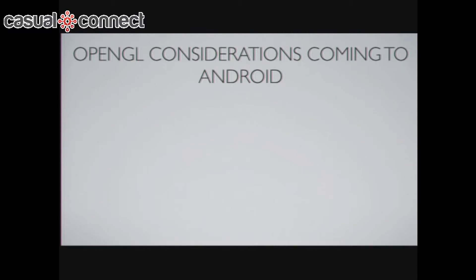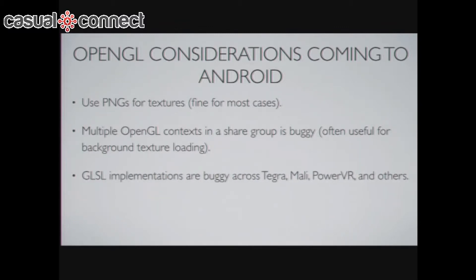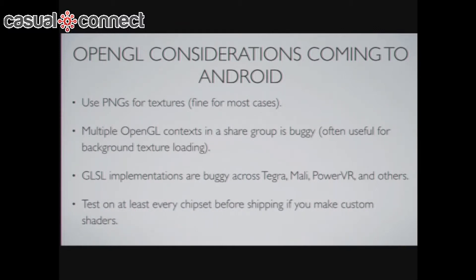This gets into the technical stuff that comes up when coming to Android from other platforms. If you're using OpenGL, it's probably best to use PNGs. Using proprietary texture compressions for each platform is going to get you into trouble in a lot of cases — PVR is popular in iOS but harder to use for Android. Multiple OpenGL contexts will also shoot you in the foot: certain Android drivers are really bad with OpenGL and multiple contexts. GLSL implementations are extremely buggy, and on Android you have many implementations. Make sure you test on every chipset before shipping if you make custom shaders.